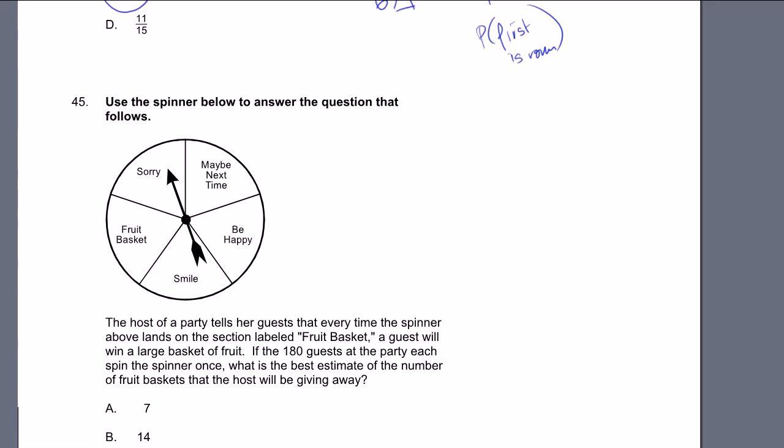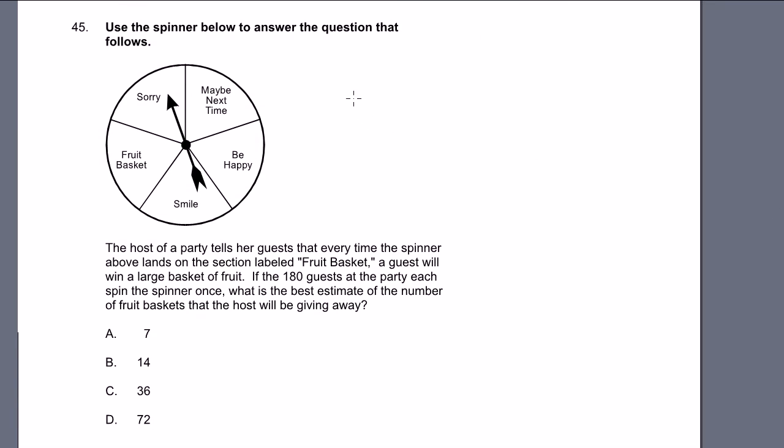Problem 45. Use the spinner below to answer the question that follows. There's our spinner. The host of a party tells her guests that every time the spinner above lands on the section labeled fruit basket, a guest will win a large basket of fruit. If the 180 guests at the party each spin the spinner once, what is the best estimate of the number of fruit baskets that the host will be giving away?